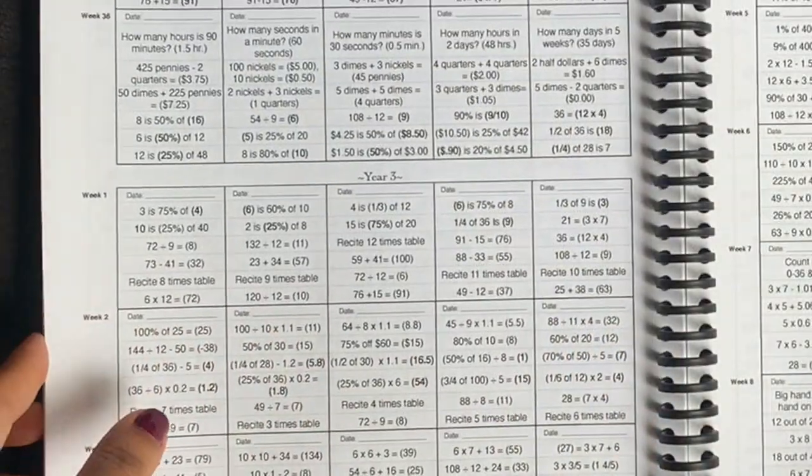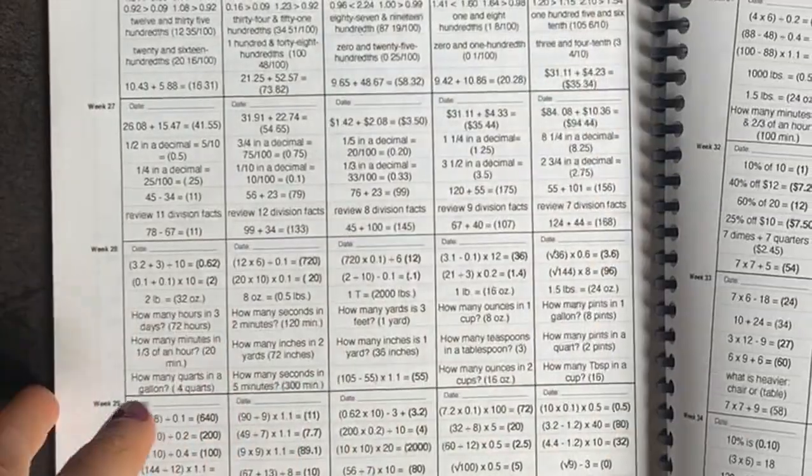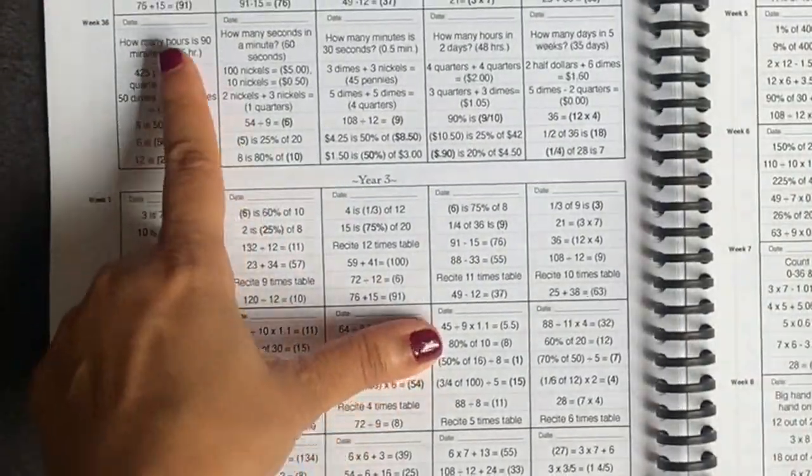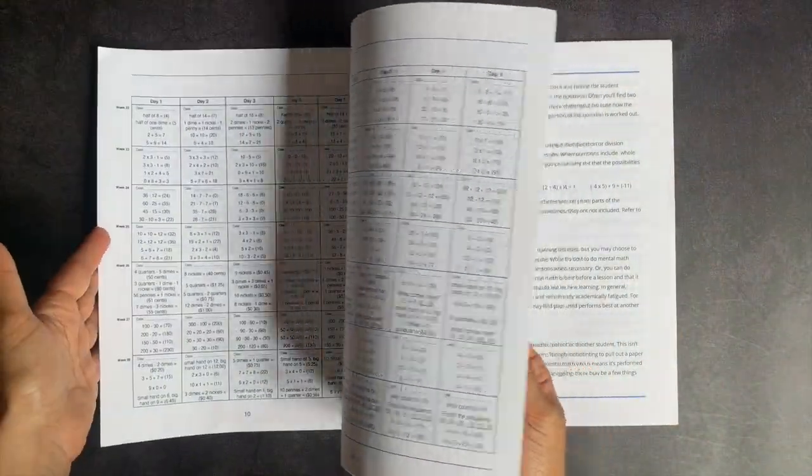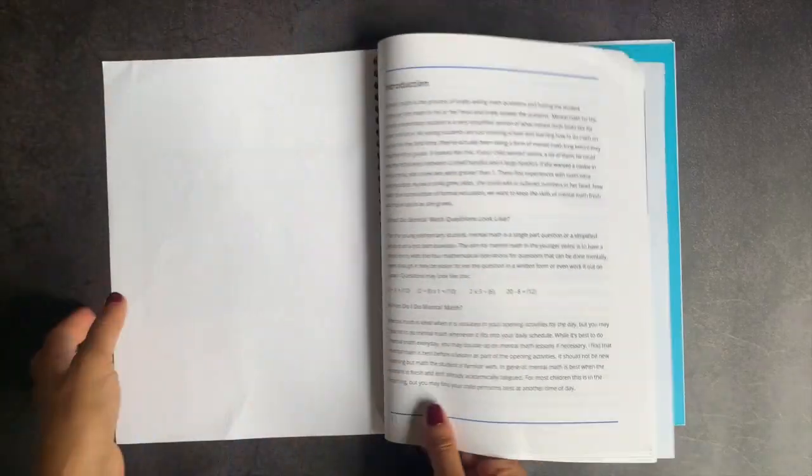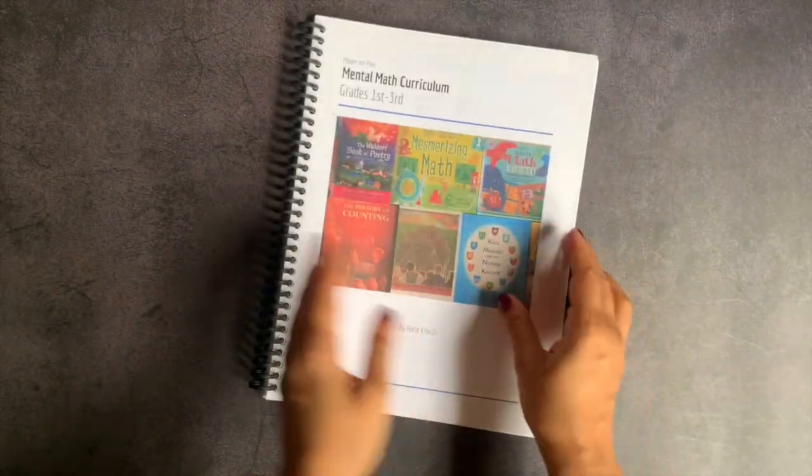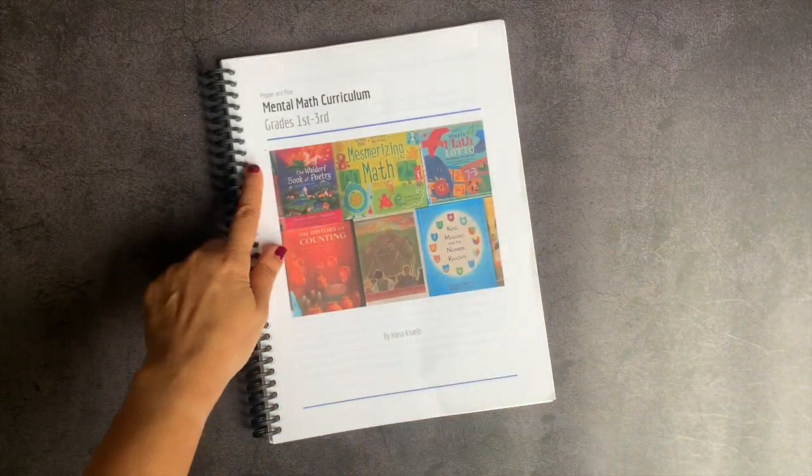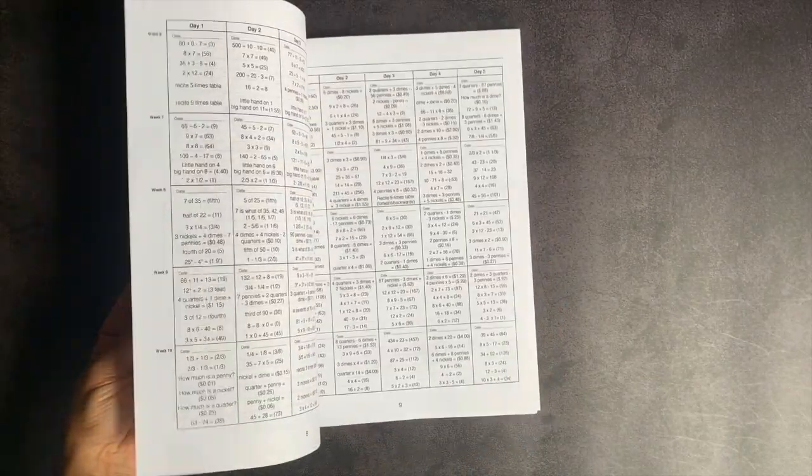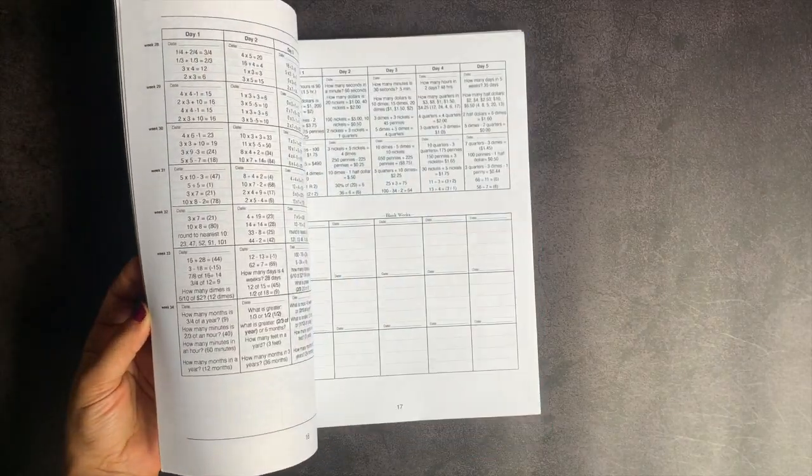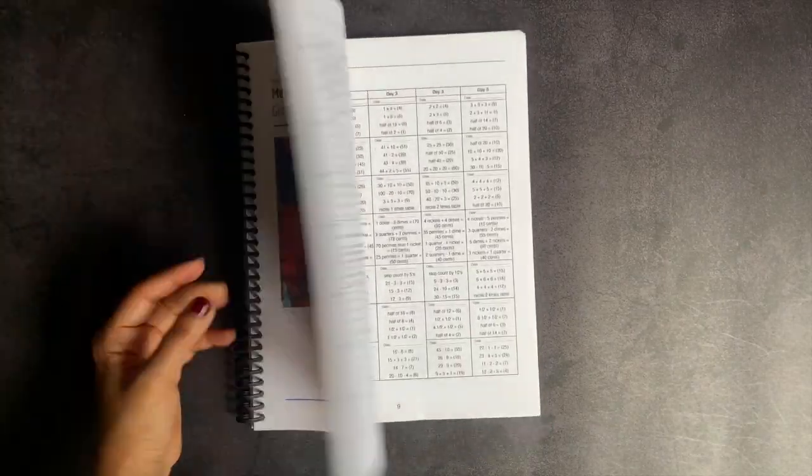Each of the sections is also divided into different years. You can see here a little separation. You got to week 36 and now you have year three. Same thing with the earlier grades, you'll have them split out into separate years. This is the mental math by Hannah over at Pepper and Pine. All of her work is of exceptional quality. I love how compact this is and how easy it is to just make it like a daily part of your routine.